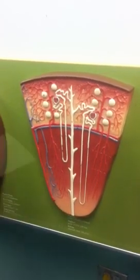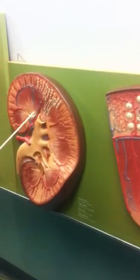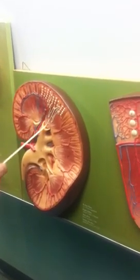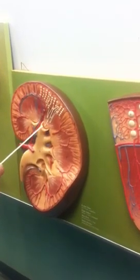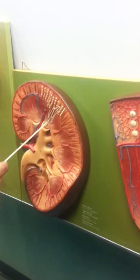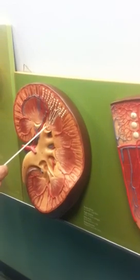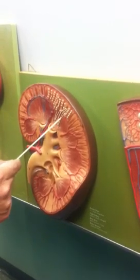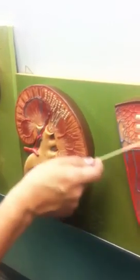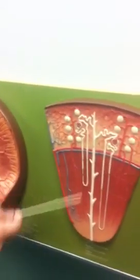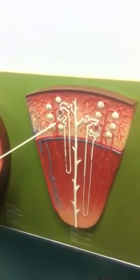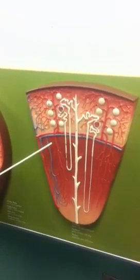You can see some of these white tubes here that represent collecting ducts, and these perhaps are loops of Henle. This is the portion of the model you would use to see the nephron and its parts.